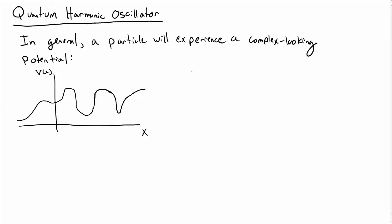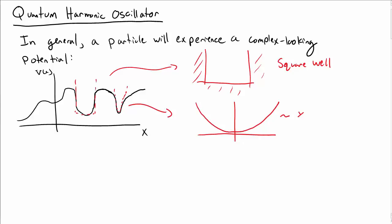Let's motivate the quantum harmonic oscillator. In general, a particle will experience a fairly complex looking potential, and parts of that potential you can model as a square well, which we've already studied. Other parts of that potential the particle will experience you could model very close to the well as a potential that goes like x squared.